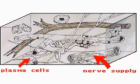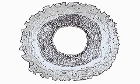Widely distributed throughout the body, areolar tissue forms binding sheaths around muscles, nerves, and blood vessels, and is present within organs as filling material.